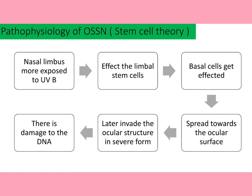Regarding pathophysiology, as mentioned in a previous video on pterygium, pterygium is mostly seen in the nasal ocular area. Similarly, OSSN is mostly seen in the nasal area, though it can also present on the temporal side. Most cases appear at the nasal limbus, which is more exposed to UVB radiation.